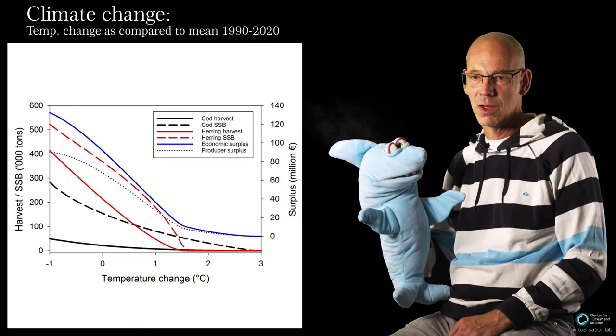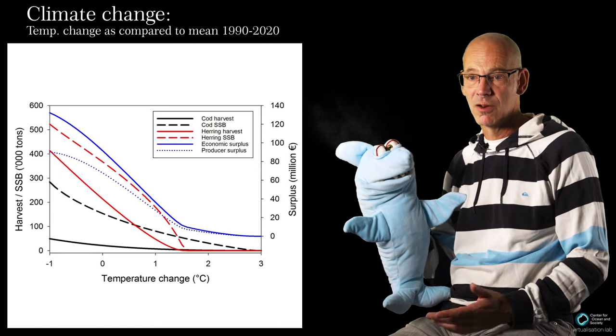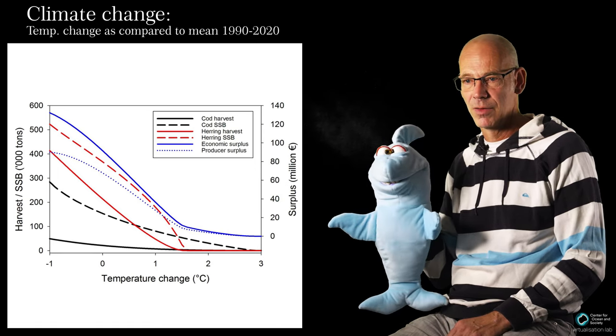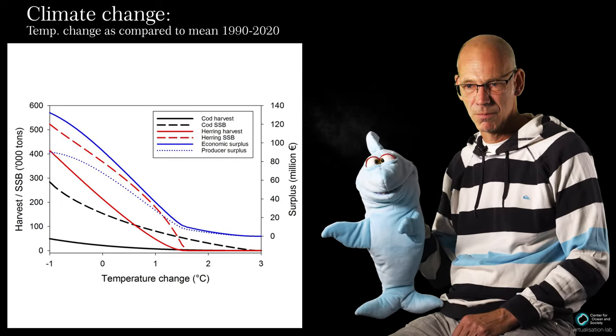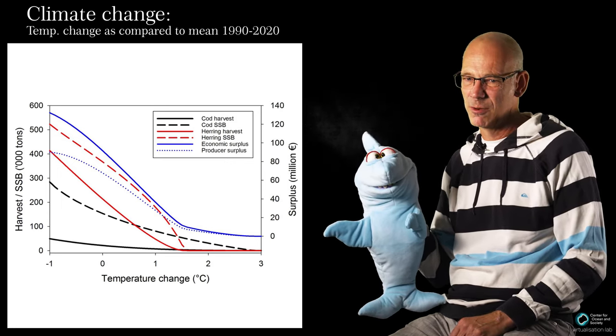At around 1.5 degrees Celsius, no further catches are taken. The herring fishery actually stops even before the cod fishery. Economic surplus is close to zero.